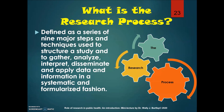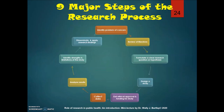The research process is defined as a series of nine major steps and techniques used to structure a study and to gather, analyze, interpret, disseminate, and apply data and information in a systematic and formalized fashion. Here is a quick overview of the nine major steps of the research process, which we will examine in subsequent slides in more detail.